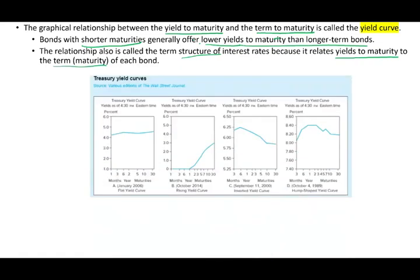This is what the yield curve would look like. This is the rising yield curve — the normal yield curve. What does normal or rising mean? It means shorter borrowing requires lower interest rates, and as time goes by — one year, three years, five years, ten, thirty — the government will have to pay more. This is a sample of the yield curve from October 2014.